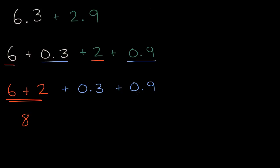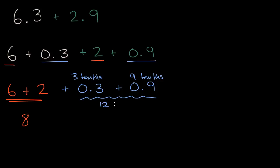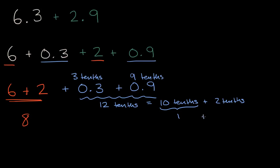And now what's three tenths plus nine tenths? This is going to get a little bit interesting. Three tenths plus nine tenths is equal to twelve tenths. But how do we write twelve tenths as a number? Well, twelve tenths is the same thing as ten tenths plus two tenths. Ten tenths is one whole, so this is going to be equal to one. So when you add these two together it's twelve tenths, which is the same thing as one and two tenths, or one plus two tenths.